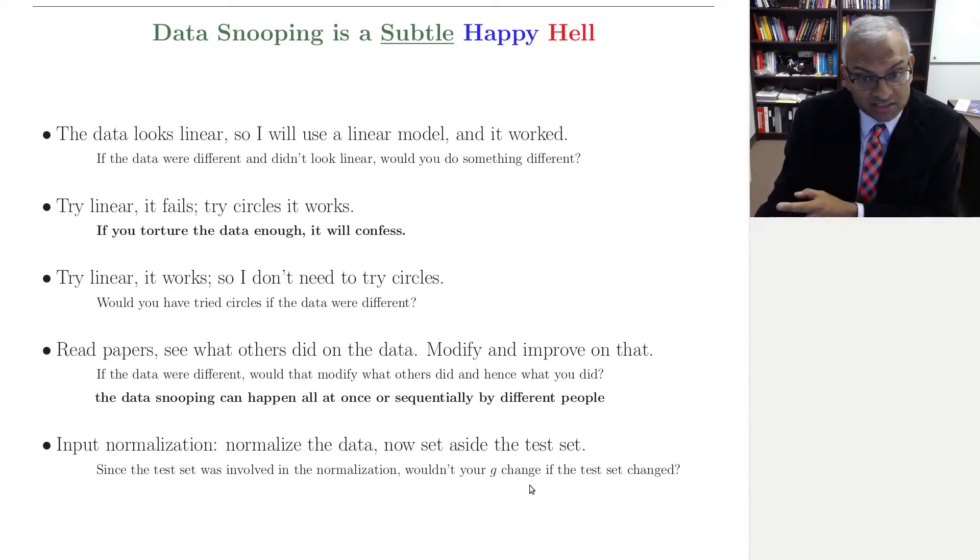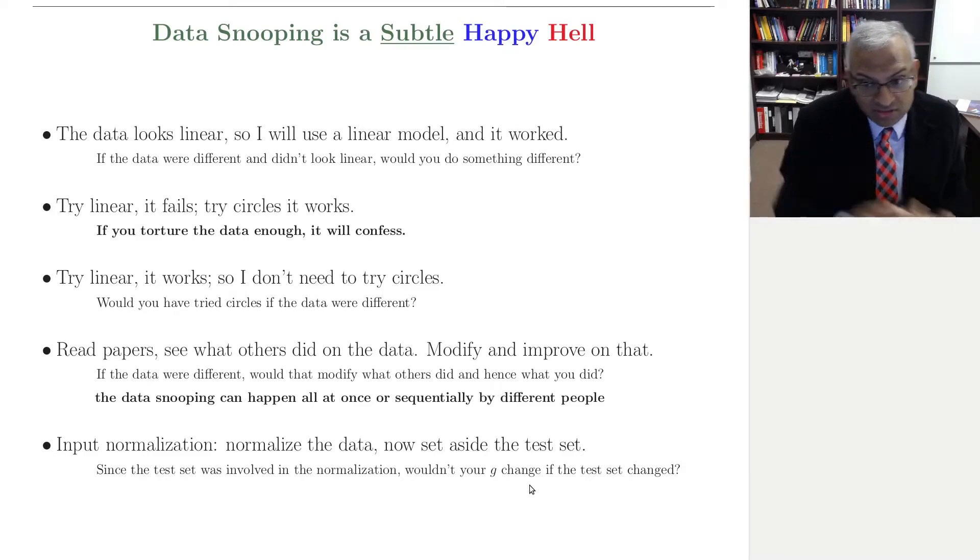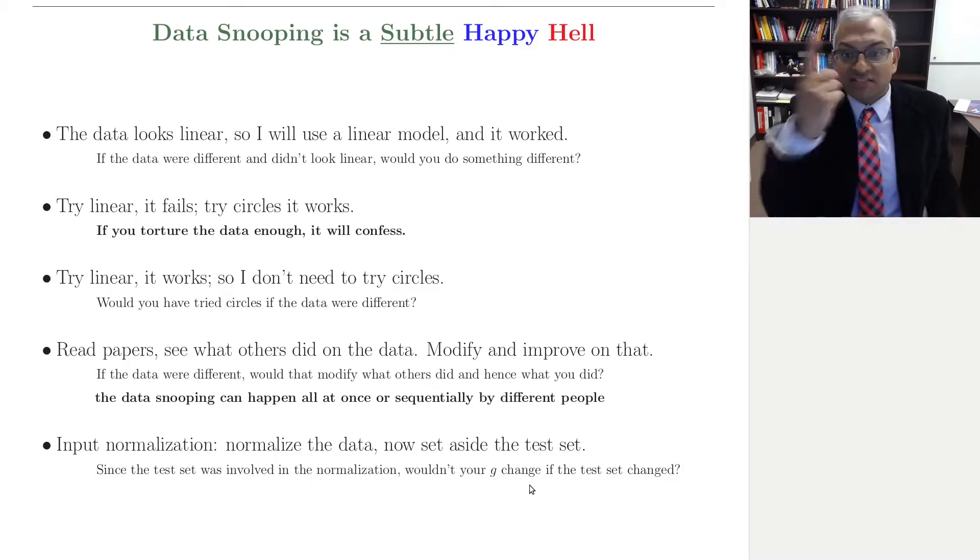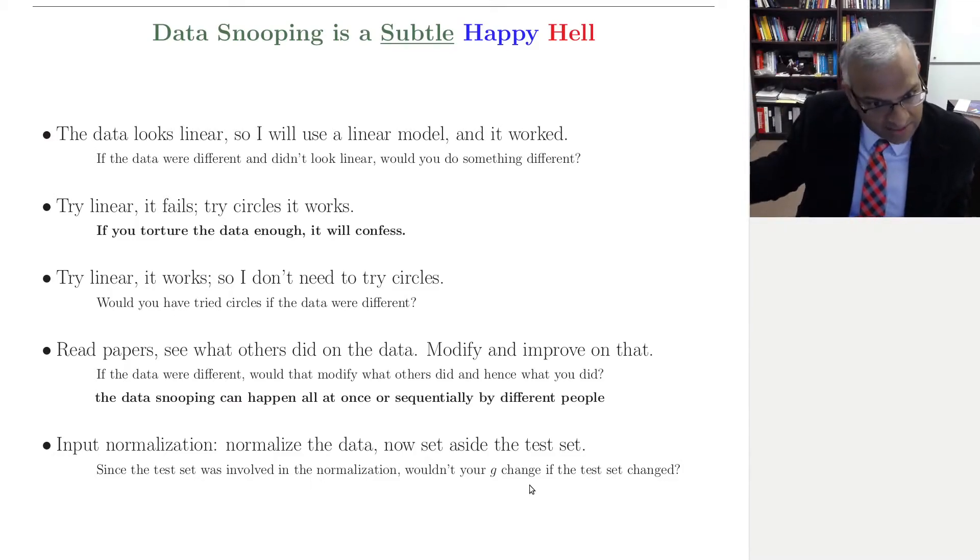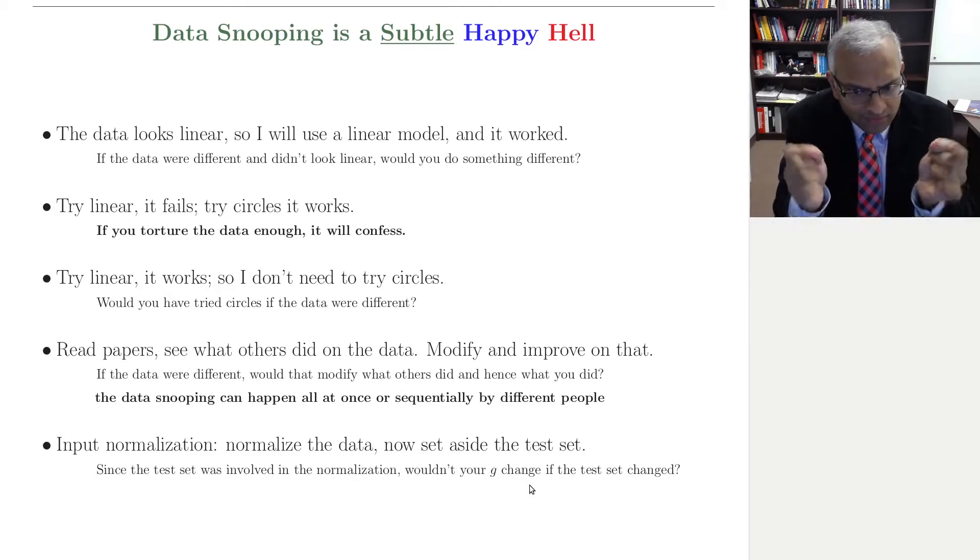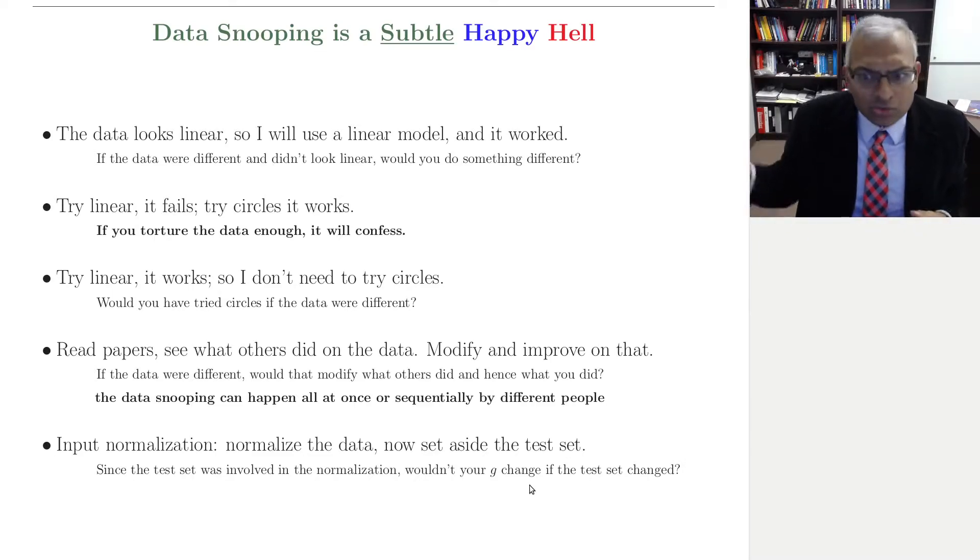Because if the test set changes, it changes the normalization. The changed normalization might change your final hypothesis. So your final hypothesis is influenced by the test set. So you cannot use the test set anymore to assess your final hypothesis. Data snooping. If the data set has in any way whatsoever affected what you did, has affected what you output from learning, then you cannot use the data to assess the learning.